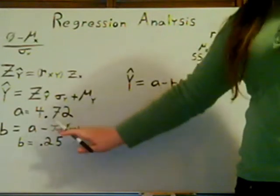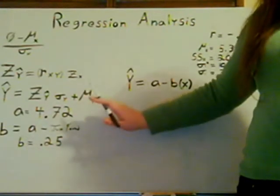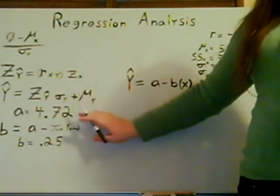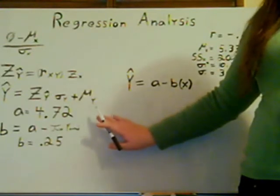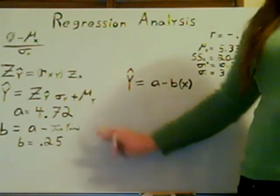B is going to be A minus the number that you just found, which was 4.47. So we're going to take 4.72 minus 4.47 that we just found, and that will give us B, which comes out to .25.